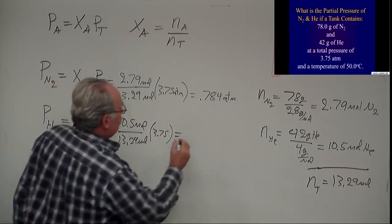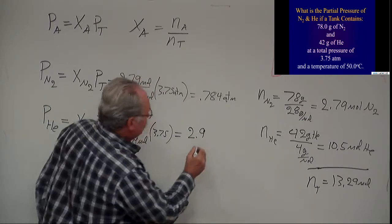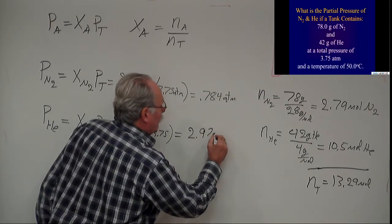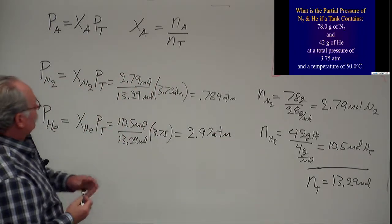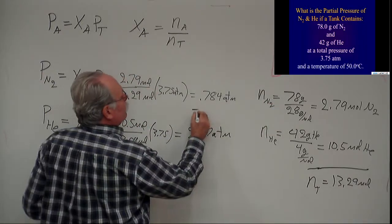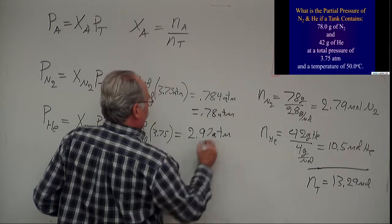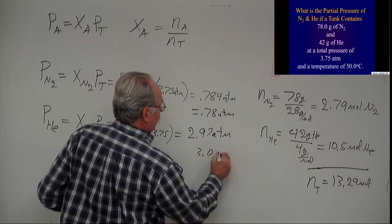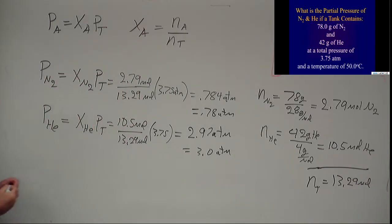And when I do this, I come up with 2.97 atmospheres. Now I should reduce these to two significant digits, so it would be 0.78 atmospheres and 3.0 atmospheres. All right, I hope that's understandable, and good luck.